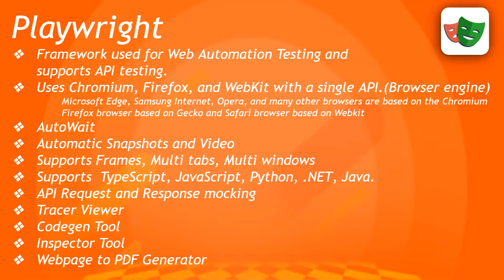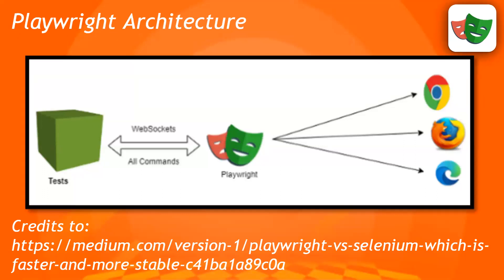Now let's look at the architectural design and internals of Playwright. Architecturally, it creates a connection in a web socket way. If you're not familiar with networking or protocol areas, it simply makes a web socket, meaning there is only one request that creates the connection between your Playwright test and the browser. There is no repeated request-response cycle — it always sends and receives over the same web socket, so you don't need to make multiple requests. Your test case makes a web socket connection to Playwright, and Playwright interacts with the different browser engines.